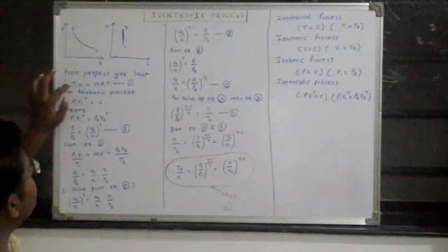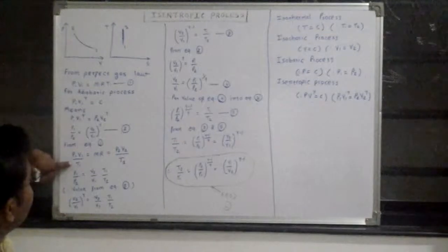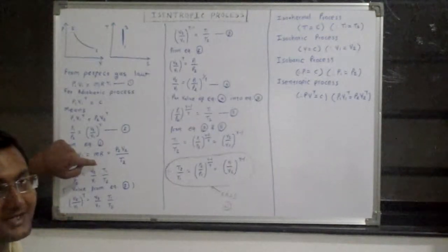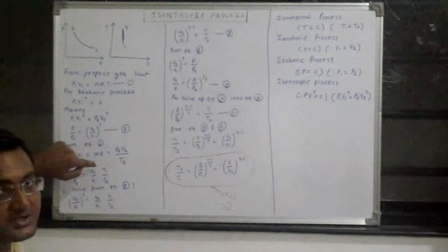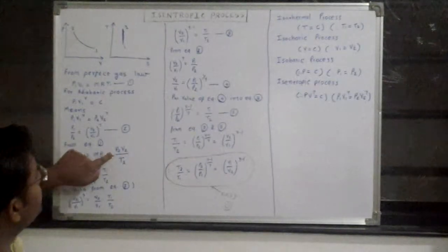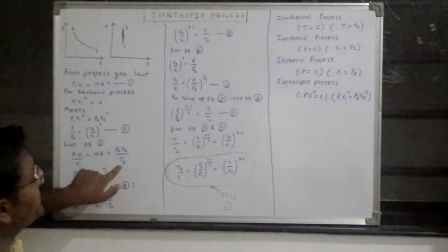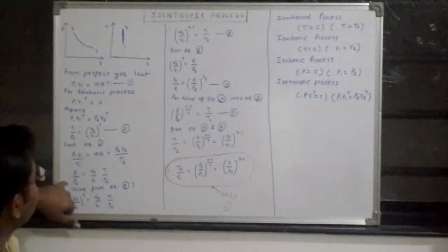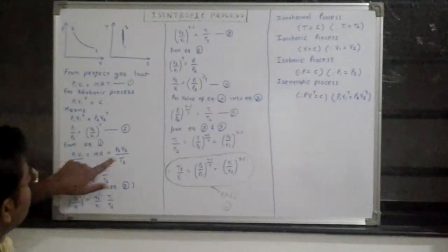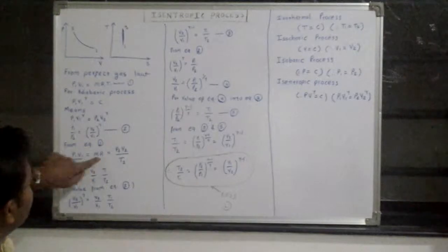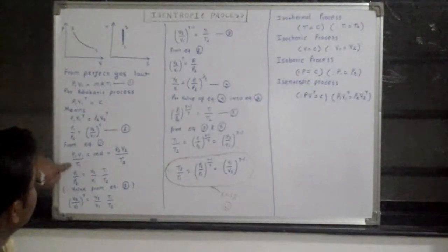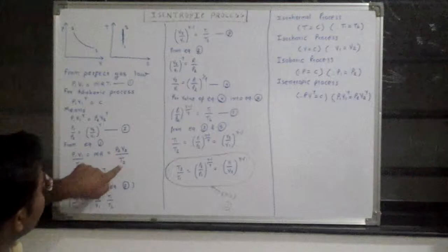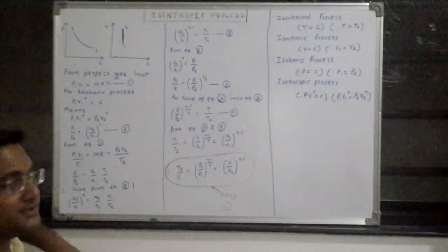From equation number 1, we can say that P1V1 divided by T1 equals mR, which is a constant value where R is the gas constant. This also equals P2V2 divided by T2. So ultimately from this equation, we can say that P1 by P2 equals V2 by V1 multiplied by T1 by T2.